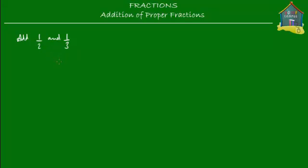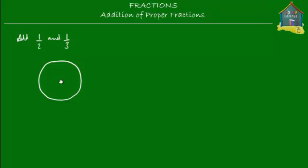Let me try to show that on a pizza. Say that I have a pizza, and I want to give half of this pizza to Annie and a third of this pizza to Betty. So how much of this pizza do I give to Annie and Betty together? This is what I want to find out.